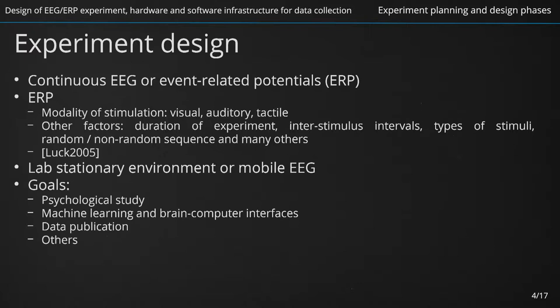Let's now move to the experiment design phase. Its core is the design of the electrophysiological experiment itself. The final settings of hardware and software should be based on answers to questions that each experimenter should ask before he or she even starts. A typical question is: what do we expect to find in the measured data? Based on the specific goal of the experiment, for example observing reactions of people in various situations or reactions to certain kinds of stimulation, the researcher can then ask the following questions.